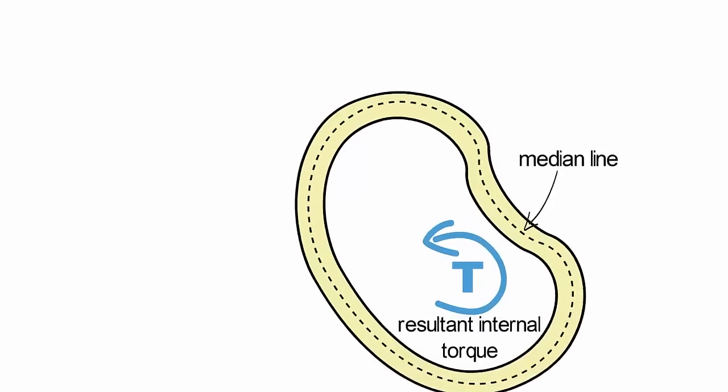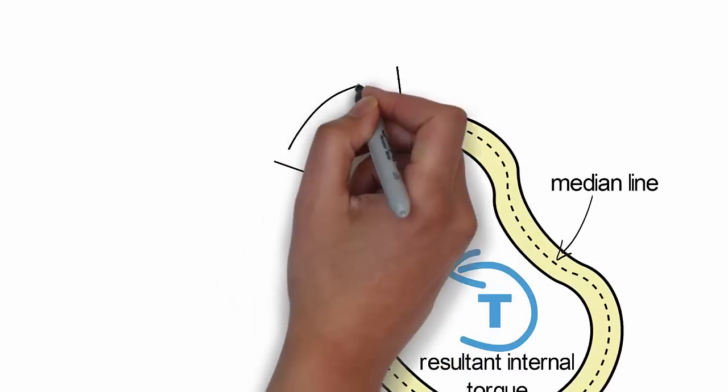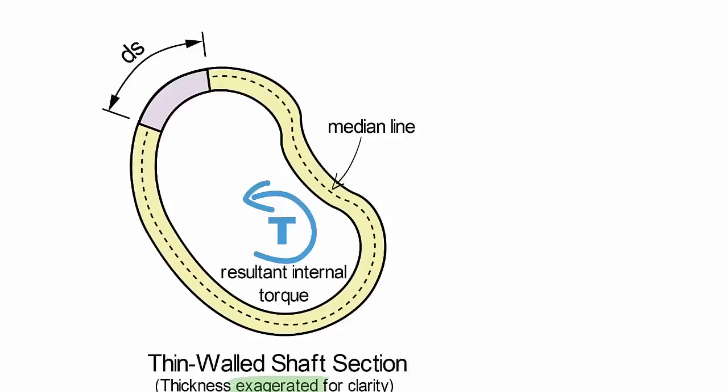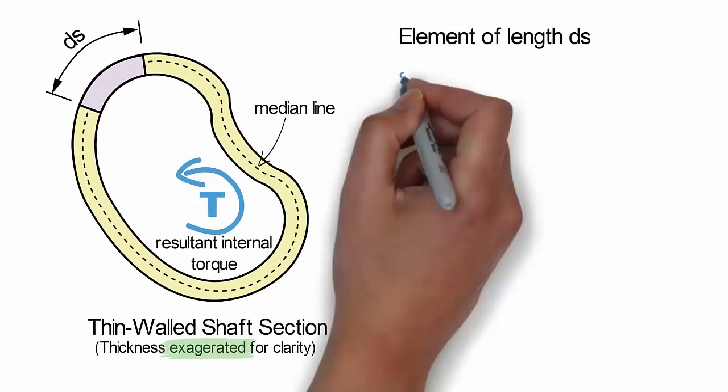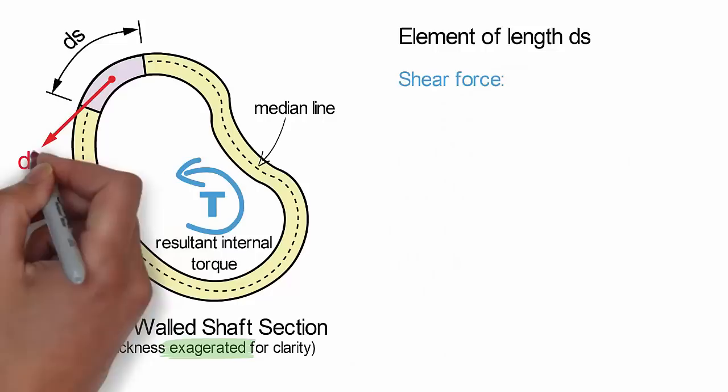This torque is a resultant of the shear flow acting along the perimeter of the cross-section. To relate these, let's consider an infinitesimal element of the shaft perimeter with a length ds.